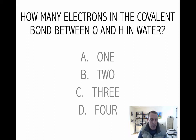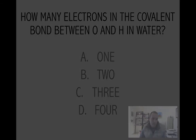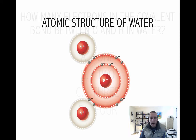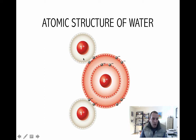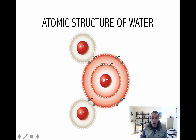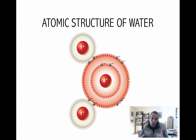In the covalent bond between oxygen and hydrogen in the water molecule, how many electrons are there? The answer is two electrons — two electrons being shared in the bond between hydrogen and oxygen gives us one covalent bond. If we had a double bond, like in carbon dioxide, there would be four electrons. And if we had a triple bond, like in diatomic nitrogen, N₂, there would be six electrons — three covalent bonds, each with two electrons, six in total.